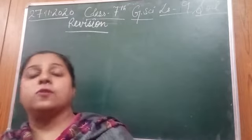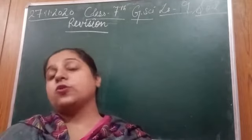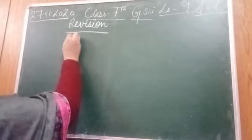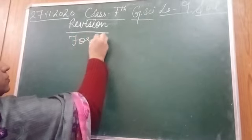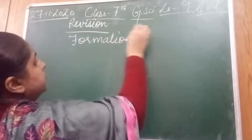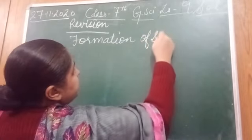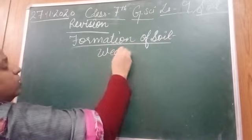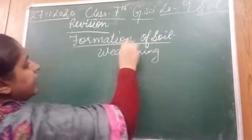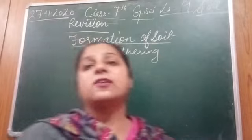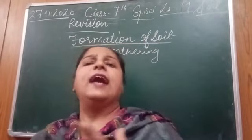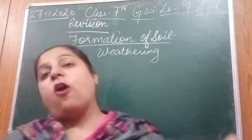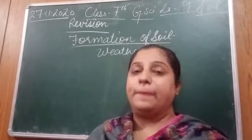Now coming to the next topic — formation of soil. How is soil formed? As you know, it is formed by the process of weathering. Weathering is the breaking down of rocks into tiny pieces by the action of air, water, wind, and other climatic factors. These big pieces of rocks get broken down into small pieces.